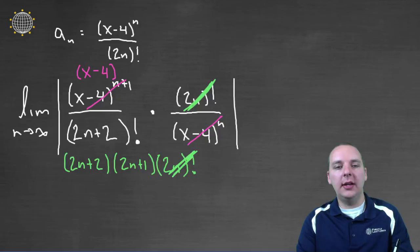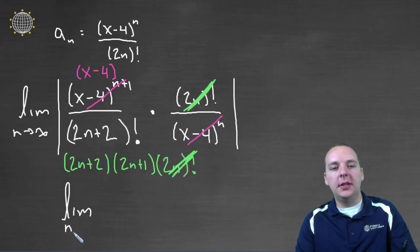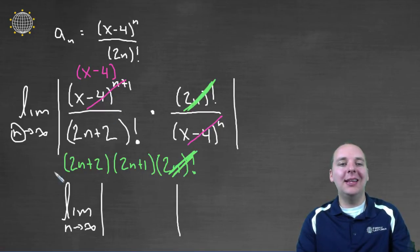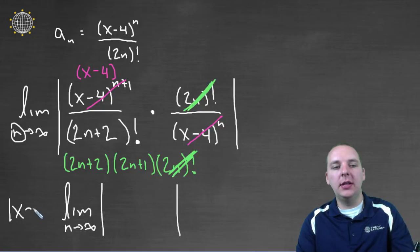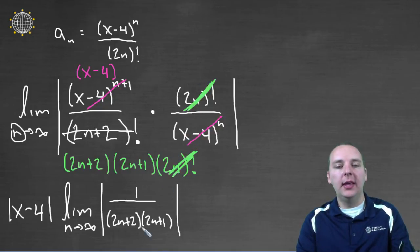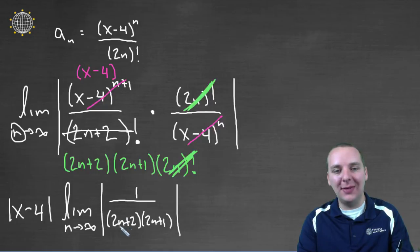Okay, so when it's all said and done, I think here's what we have. We have a limit as n approaches infinity, absolute value. Okay, now look at the x minus four. Do you see how the x minus four doesn't depend on n? It's just an x minus four. So you can pull it outside the limit. So if it doesn't depend on n, it can come outside the limit. Now the factorials are gone. We only have one over two n plus two, times two n plus one. The two n factorials cancelled.